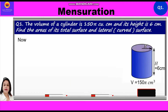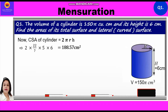Now, curved surface area of cylinder = 2πrh. Substituting the values: 2 × (22/7) × 5 × 6, which equals 188.57 cm². So curved surface area = 188.57 centimeters square.